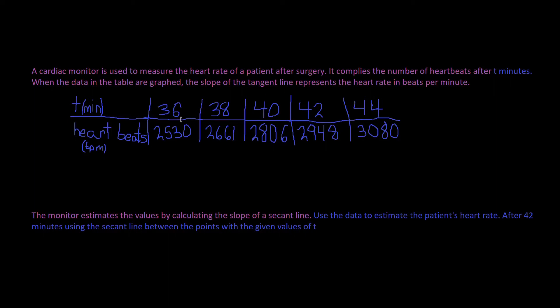This is our table of values. The monitor estimates this value by calculating the slope of a secant line. Use the data to estimate the patient's heart rate after 42 minutes, using the secant line between the points with the given values of t.